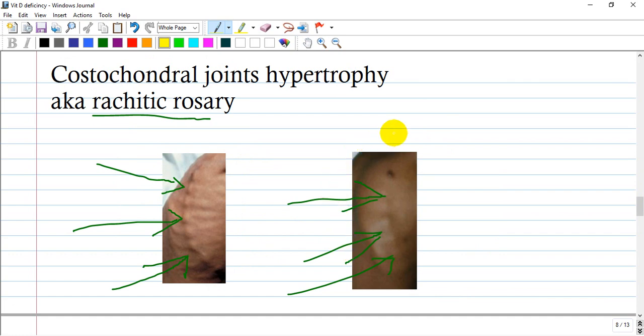Costochondral joint hypertrophy, also called rachitic rosary. You see this hypertrophy of the joints, and it is classic, bilateral for sure.